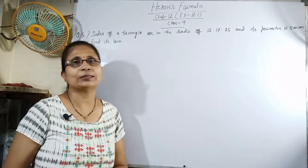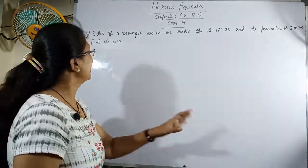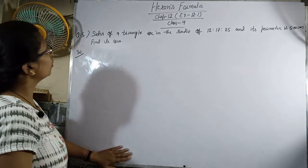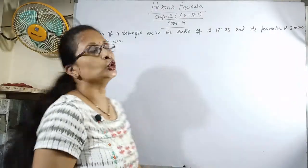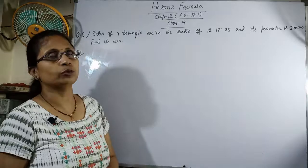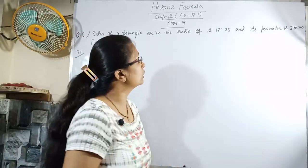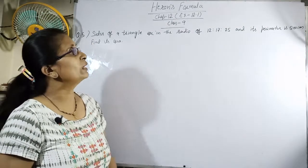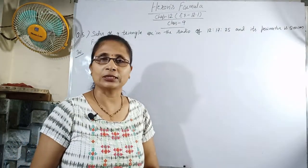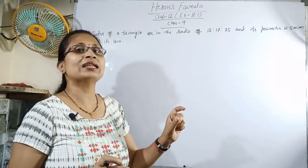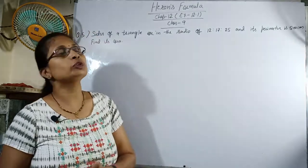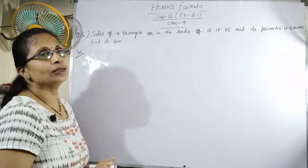but you need to understand the concept. Let's start. The question states: sides of a triangle are in the ratio 12, 17, and 25, and its perimeter is 540 cm. We need to find its area.